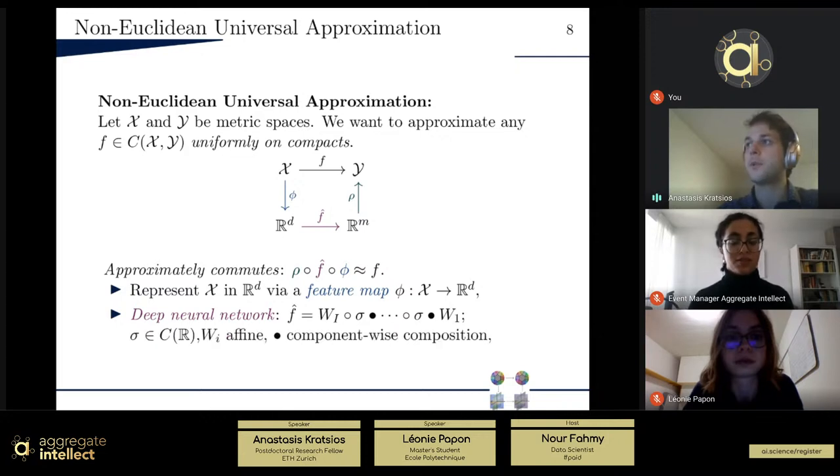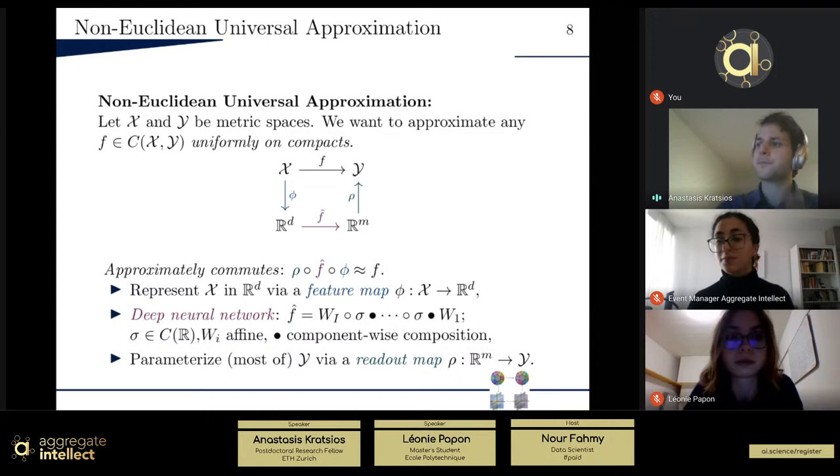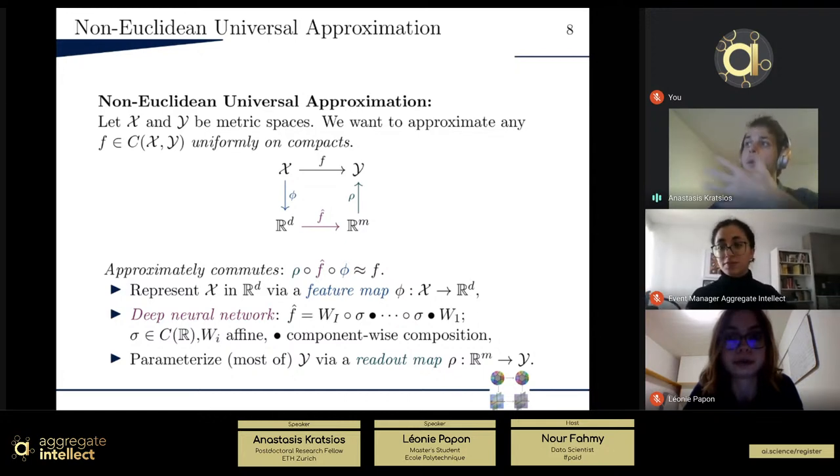And then of course, we need to return to our output space. So then we do this opposite of a feature map, which is sometimes called a readout map. So in other words, you can think of this as parametrizing. And the key point is most of Y. So in other words, we represent our space, we pass it through a specific neural network, and then we kind of parametrize most of the output space in the right way. And then we can approximate that for approximately.